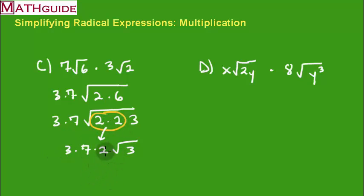Well, now what I want to do is multiply all this stuff together. So 3 times 7 is 21. 21 times 2 is 42, radical 3. And there you go. There's my answer there.